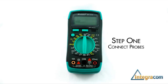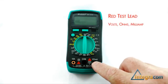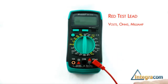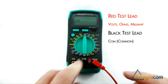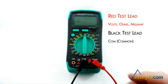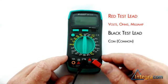Connect the red test lead to the volts ohms milliamp jack and the black lead to the common terminal. Set the rotary switch at the desired DC voltage point.